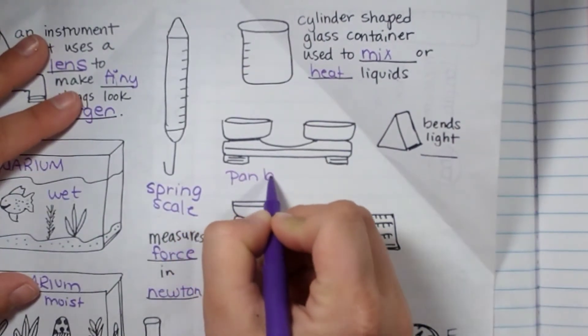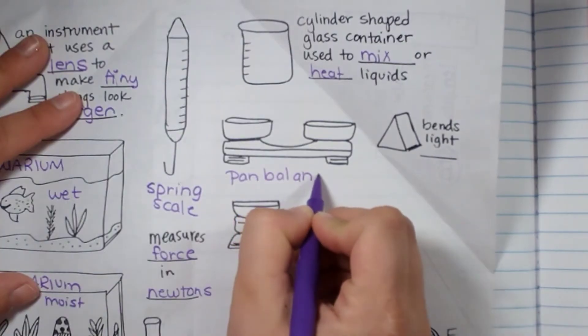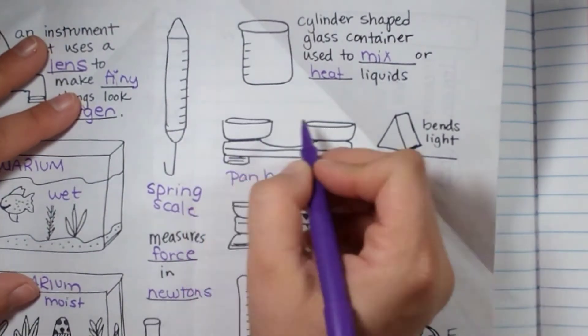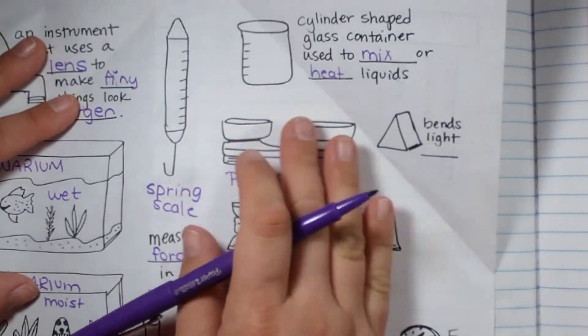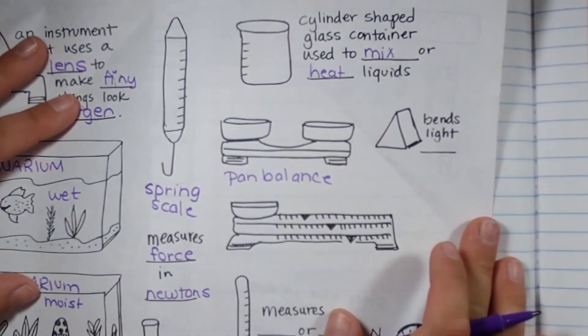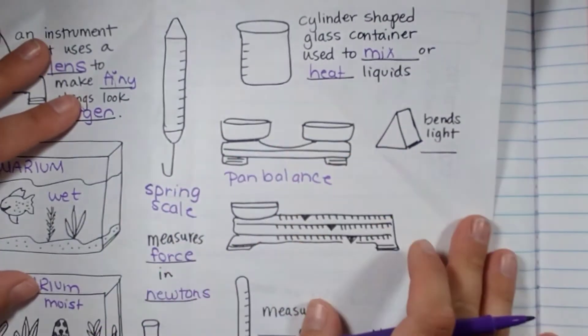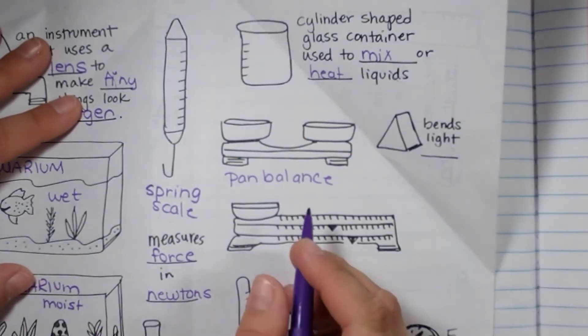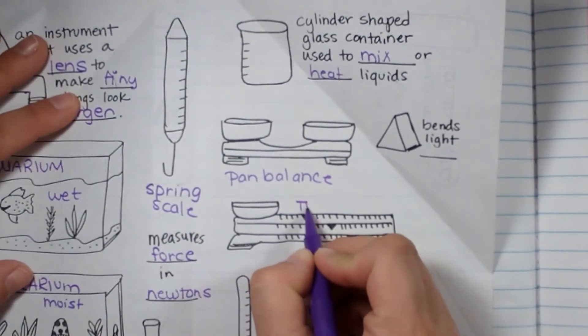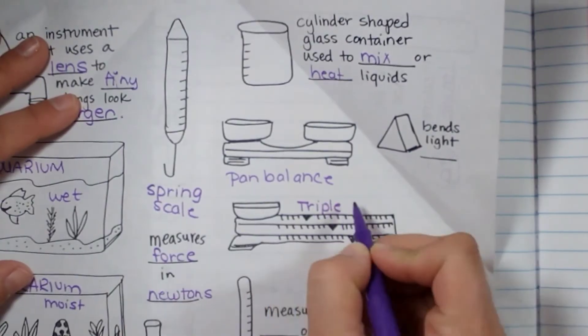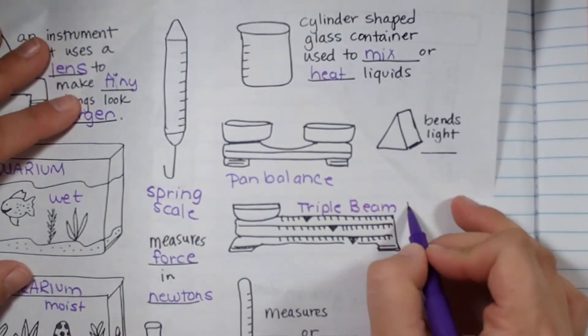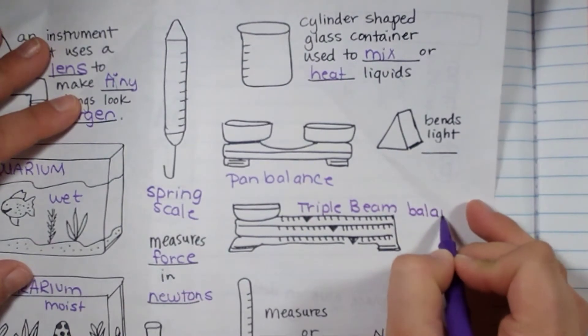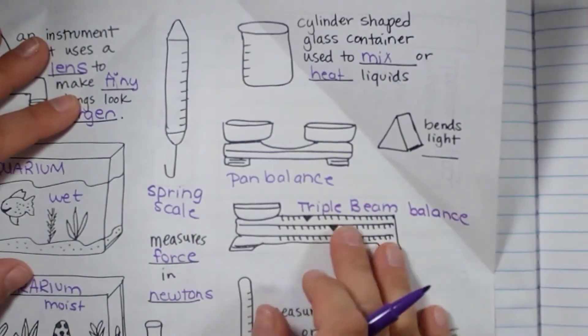A pan balance helps you measure weight against something else. So you put something in each, and you see which one's heavier or has more mass. Now the triple beam balance helps you measure mass as well. You put your item in the container, and it'll measure the mass.